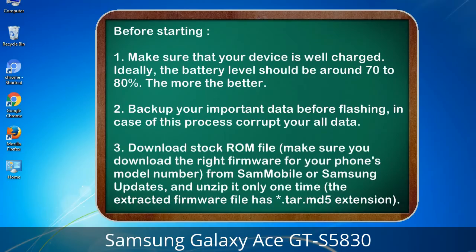Before starting: 1. Make sure that your device is well charged. Ideally the battery level should be around 70 to 80% — the more the better. 2. Back up your important data before flashing, in case this process corrupts your data. 3. Download the stock ROM file and make sure you download the right firmware for your phone's model number.